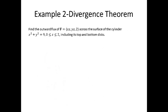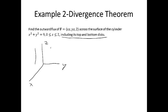Example 2 asks us to find the outward flux of a vector field F across the surface of the cylinder x² + y² = 9, for z between 0 and 2, including its top and bottom disk. So your surface S is actually comprised of three pieces. You have your circular cylinder, we'll call that S1, which has the equation x² + y² = 9.